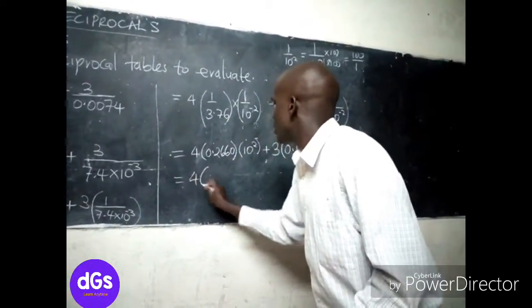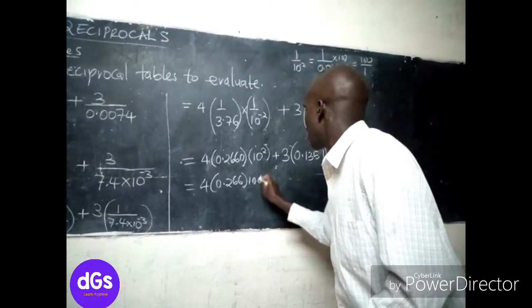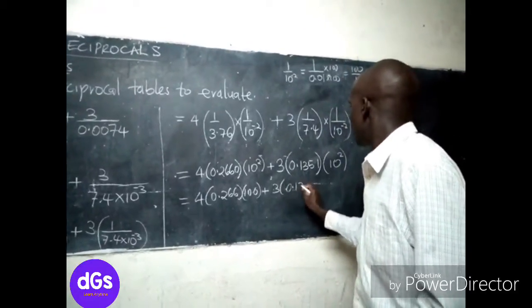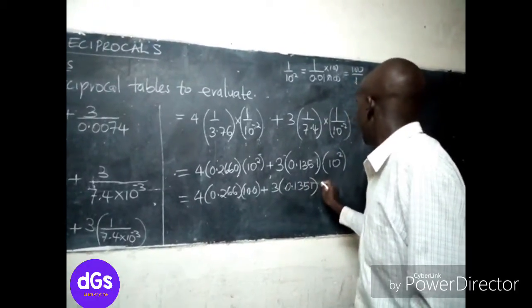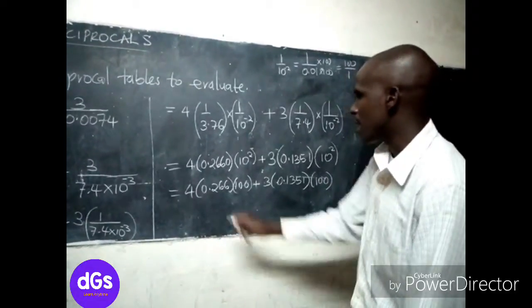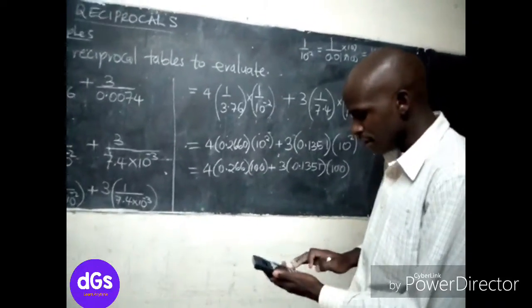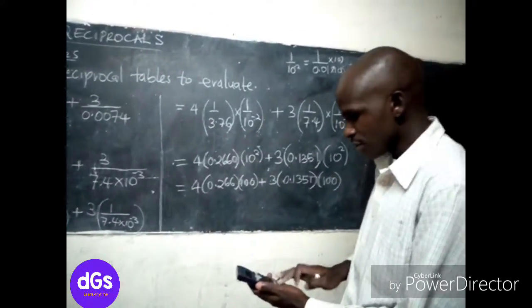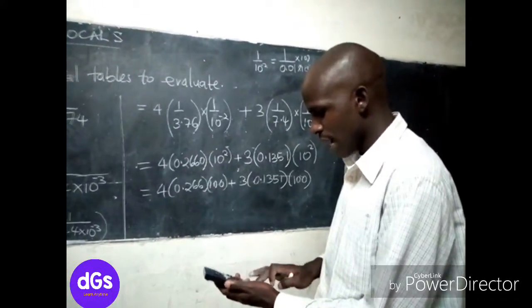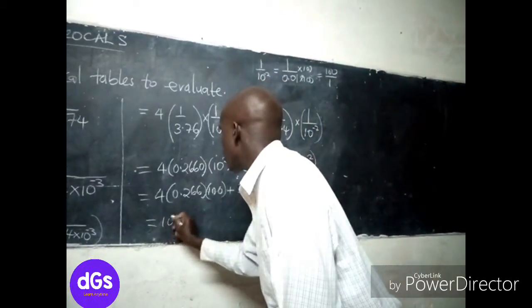So this one will be 4 times 0.266 times 100, plus 3 times 0.1351 times 100. Now from our calculator, we can say this is 4 times 0.266 times 100, so this one becomes 106.4.